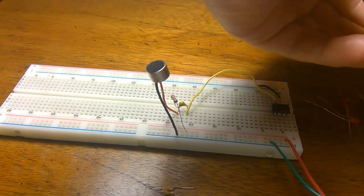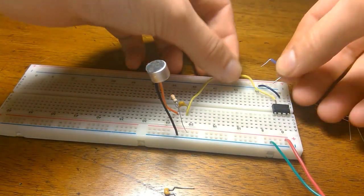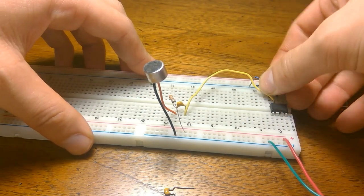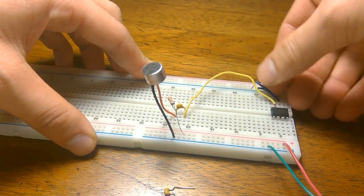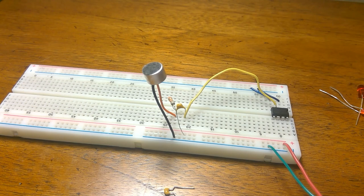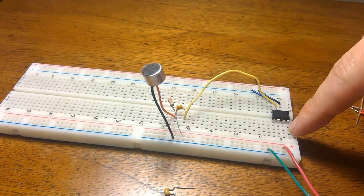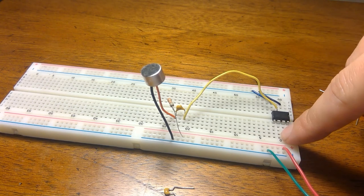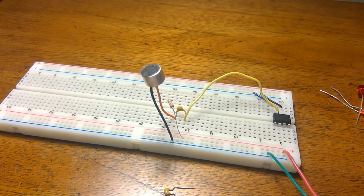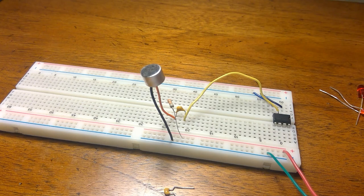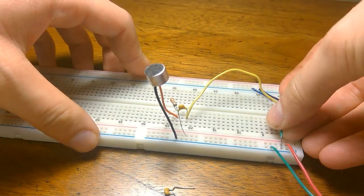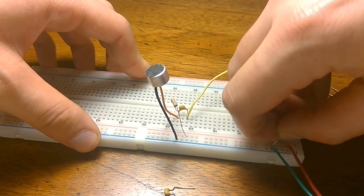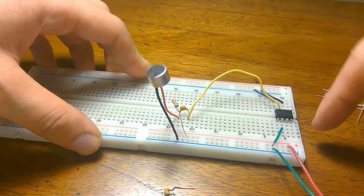Pin 4 goes to ground. Pin 8 right here not connected, pin 7 not connected, pin 6 is to positive 5 volts. So let's put pin 6 to 5 volts here.